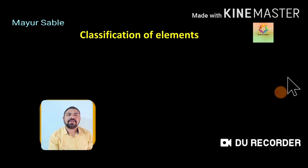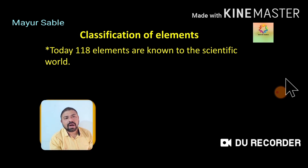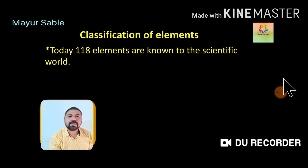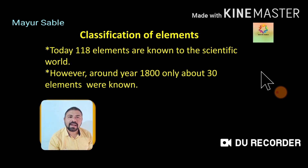We will start with the classification of elements. As you know, in the previous standard you learned about the elements and are familiar with the structure of the atom. Although the elements are different, their atoms share similar properties. Today, 118 elements are known to the scientific world, but around the year 1800 only about 30 elements were known — showing how much research has occurred in the last 220 years.